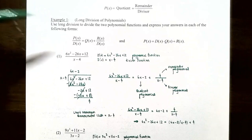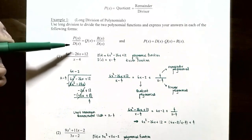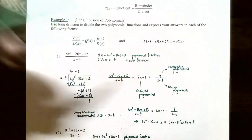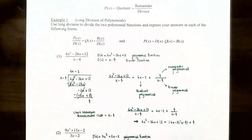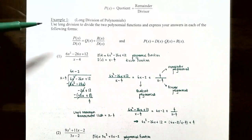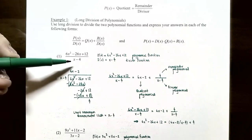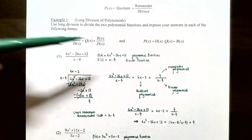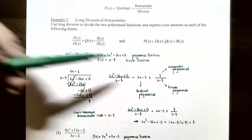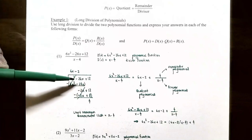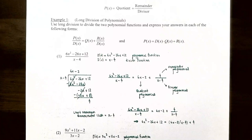Example 1, long division of polynomials. Use long division to divide the two polynomial functions and express your answers in each of the following forms: P(x)/D(x) = Q(x) + R(x)/D(x), and also P(x) = D(x) · Q(x) + R(x). Number 1: take 6x² - 26x + 12 as the dividend polynomial, divided by x - 4 as the divisor. P(x) = 6x² - 26x + 12, D(x) = x - 4. The dividend goes inside the division bar, the divisor goes outside.